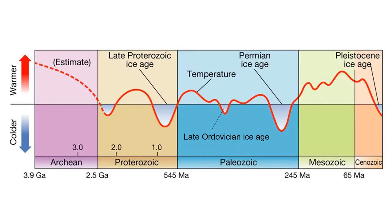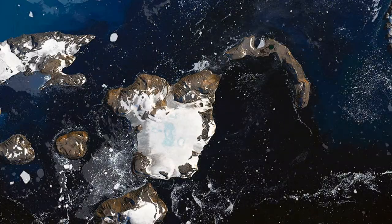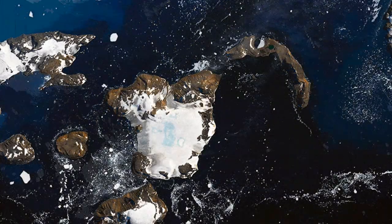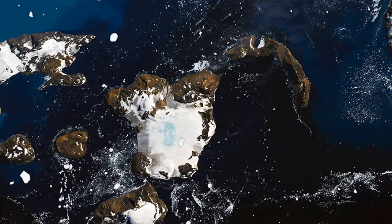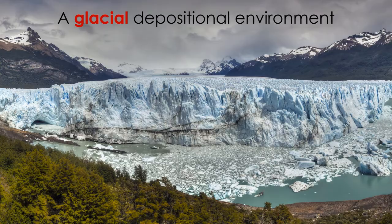In fact, Earth was an ice planet like Hoth on multiple occasions in its history. There have been many glaciations in Earth history. Glaciations are periods of time when bodies of ice like glaciers and sea ice cover Earth's surface. Glaciation is also the name of the process of ice forming and expanding on the surface of Earth.